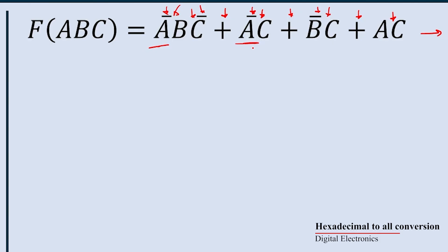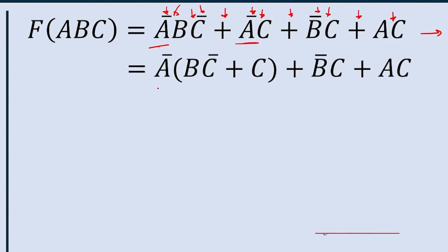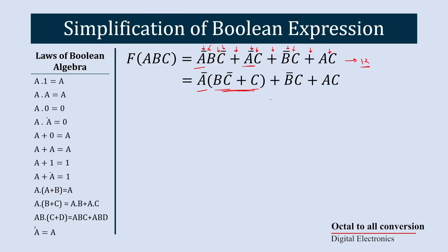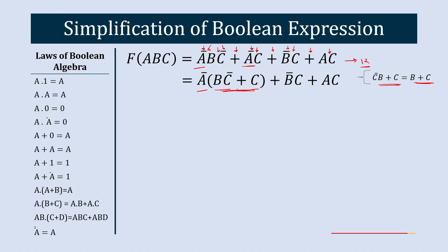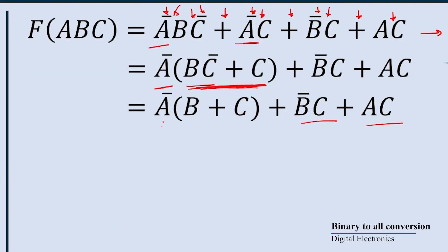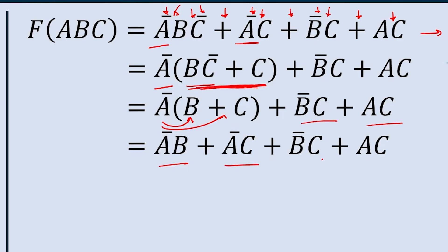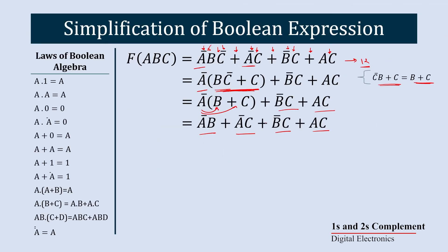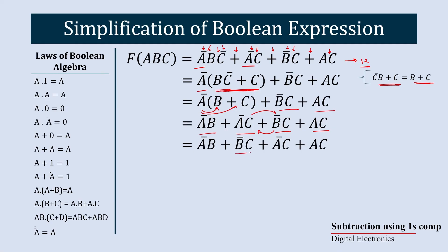In the first and second terms, Ā is common. Factoring out Ā gives: Ā · (BC̄ + C). This looks similar to what we saw earlier: C̄·B + C = B + C. So we replace BC̄ + C with B + C, giving: Ā · (B + C) + B̄C + AC. Multiplying Ā through gives: ĀB + ĀC + B̄C + AC. Rearranging, we get: ĀB + B̄C + ĀC + AC.